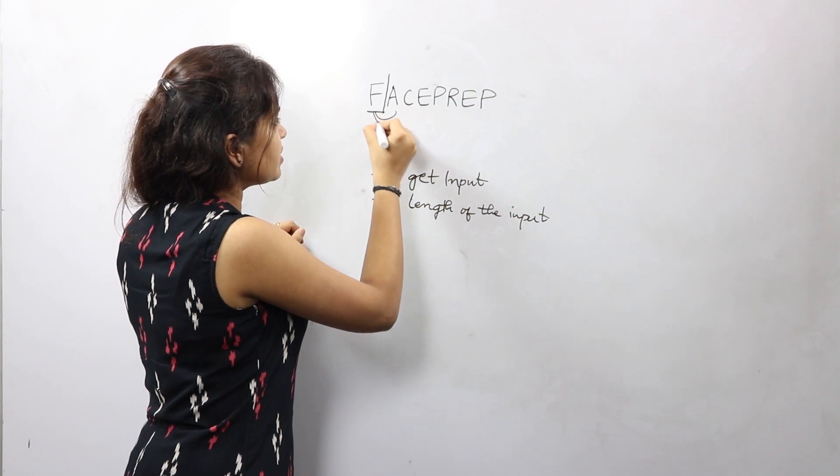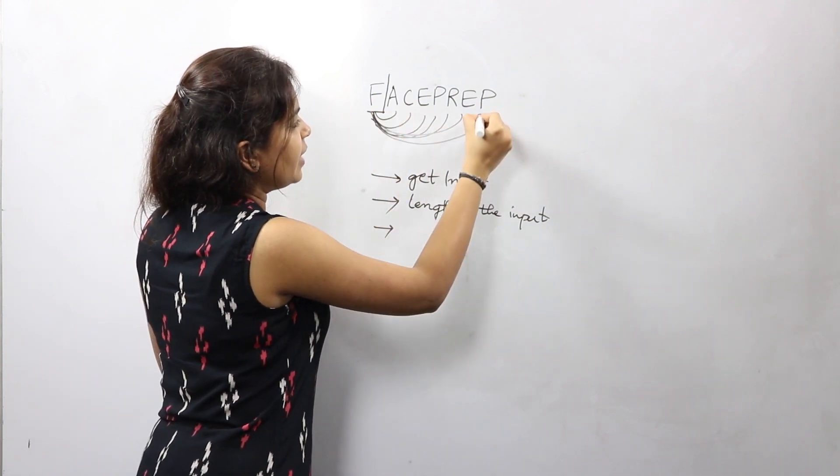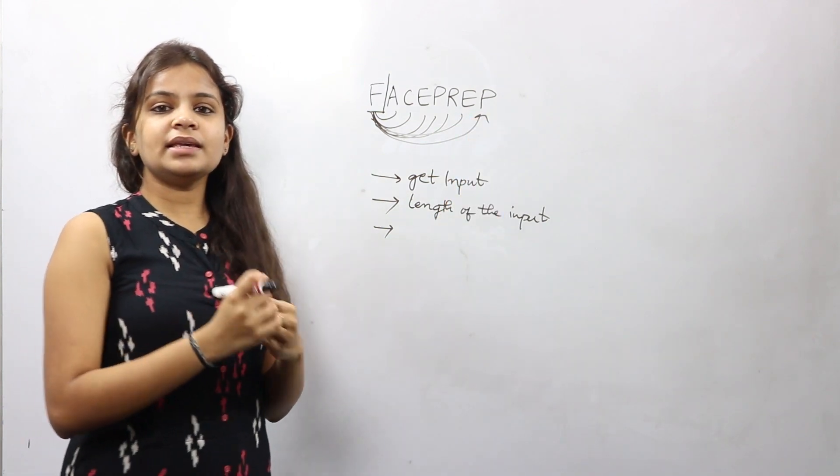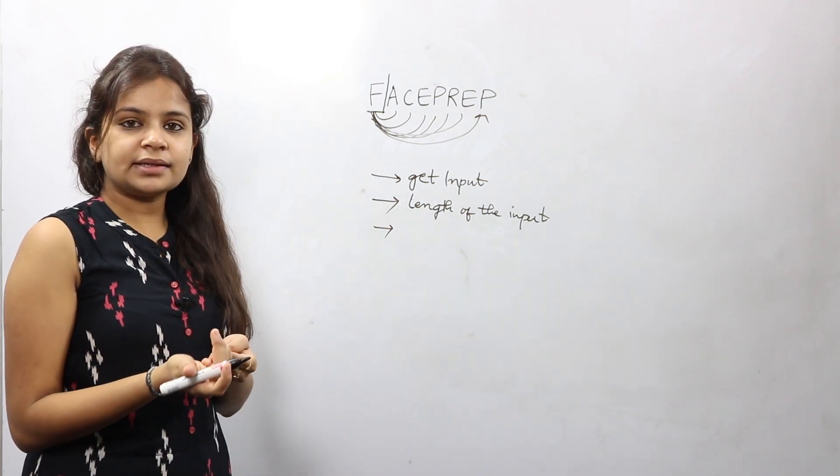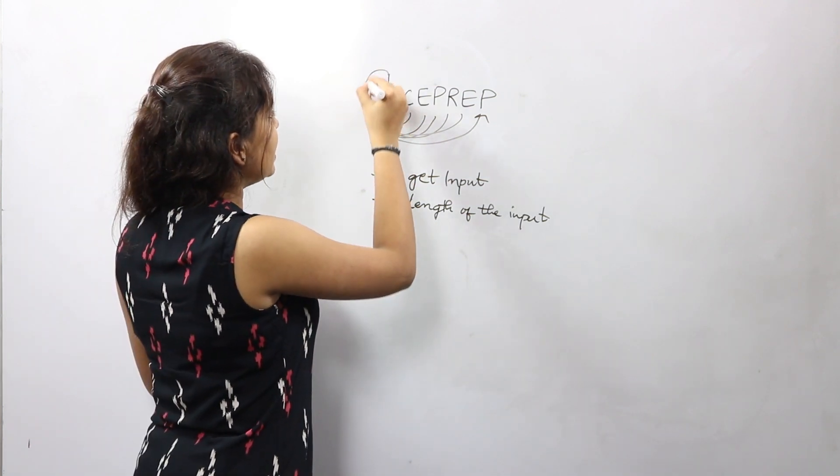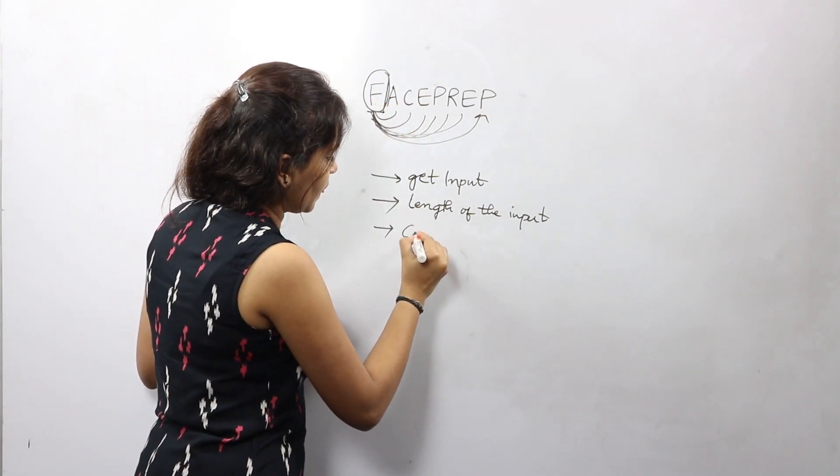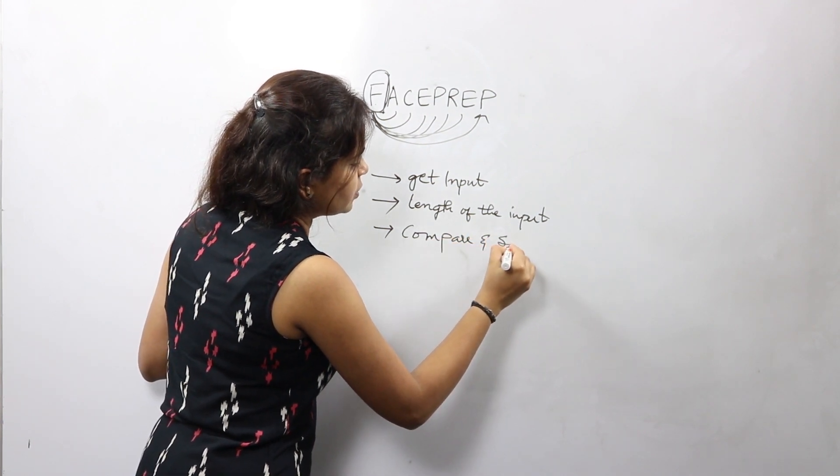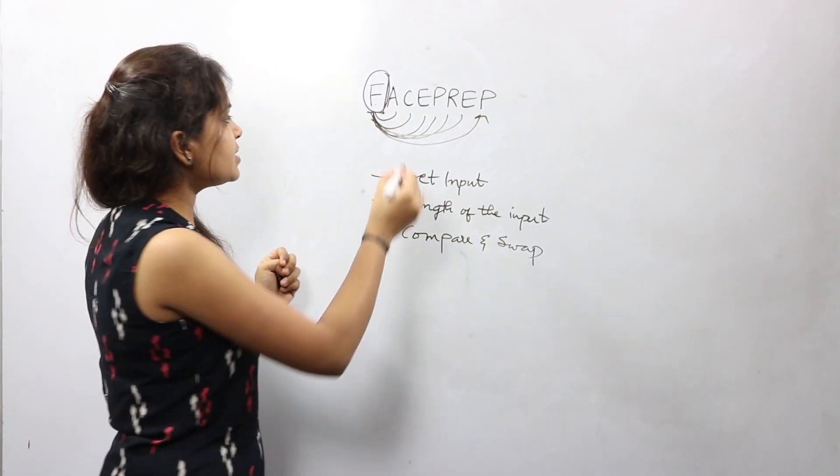Compare it with every other character and see if it is smaller than that character or greater than that character. If you realize any other character is smaller than F, then immediately swap it. So compare and swap. The logic also holds for all other characters.